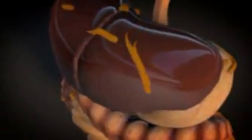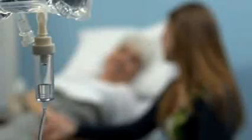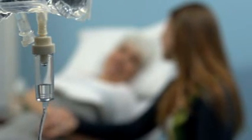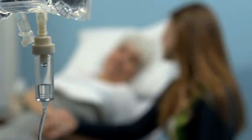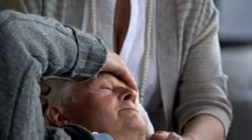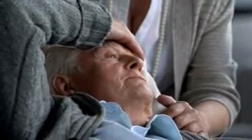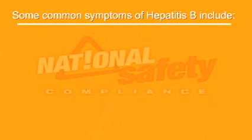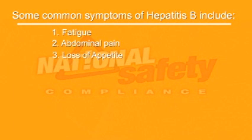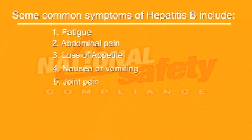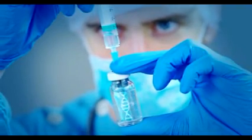Hepatitis B is a virus which affects the liver. Most cases of hepatitis B don't last long; the body's immune system typically will fight the virus off in a few months and then is immune forever. Unfortunately, some people are not able to fight the virus and end up with chronic liver infection. Such infections can lead to liver failure, cancer, and even death if left untreated. Some common symptoms of hepatitis B include fatigue, abdominal pain, loss of appetite, nausea or vomiting, joint pain, and jaundice. There is a vaccine available for hepatitis B.